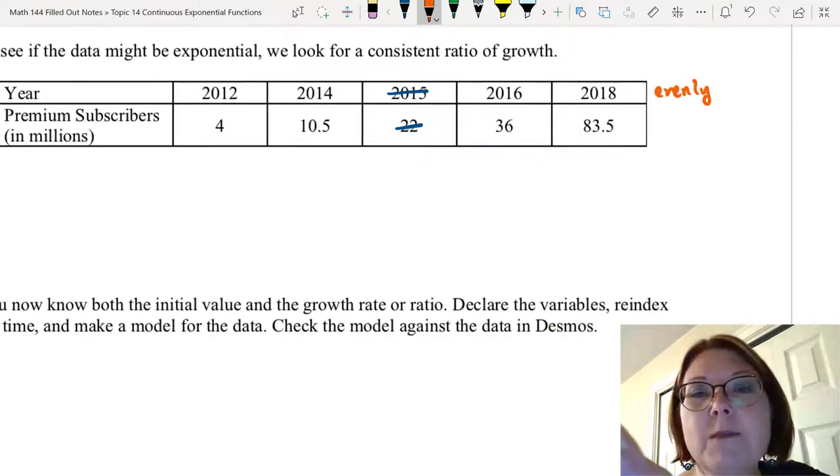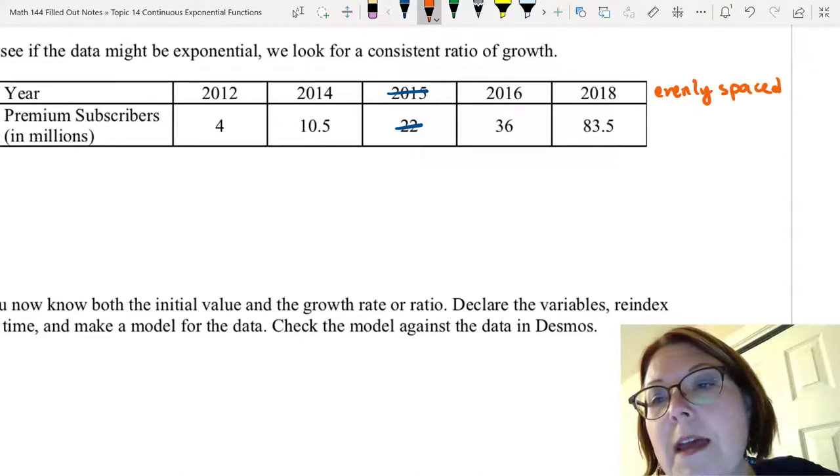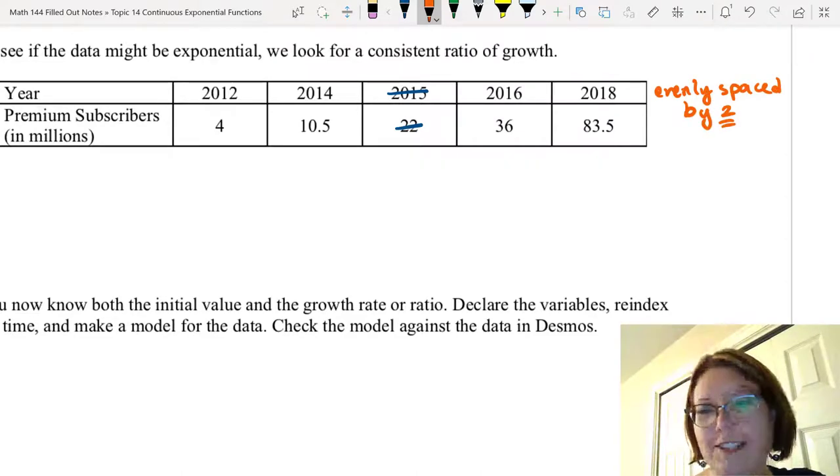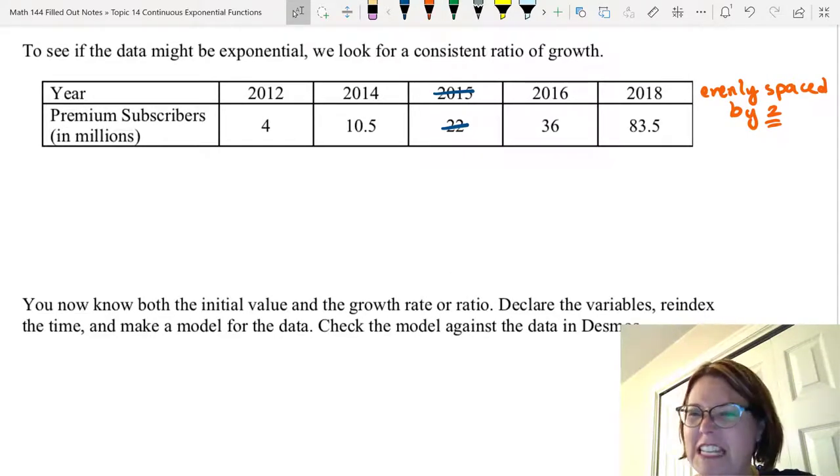Now they are evenly spaced by 2, so we will have to pay attention to that later. Somewhere that's going to come into play. I'll let you think about that for a little while. Let's go ahead and find the growth ratios to start with.